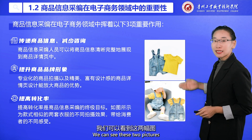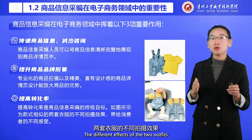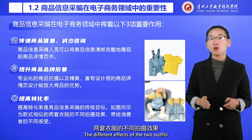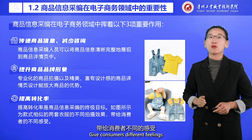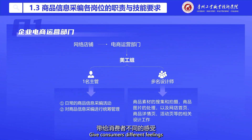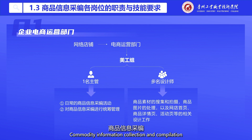We can see these two pictures. The different effects of the two outfits give consumers different feelings. Now let's take a look at commodity information collection and compilation responsibilities and skill requirements for each position.